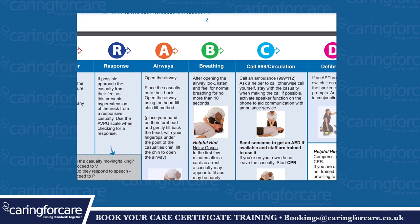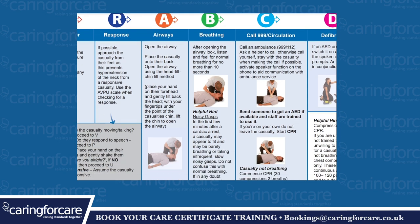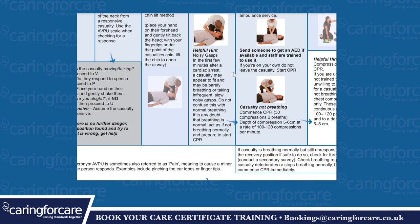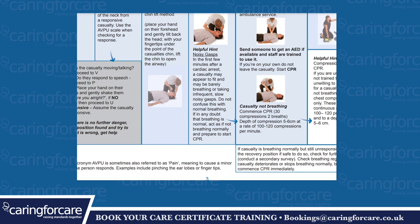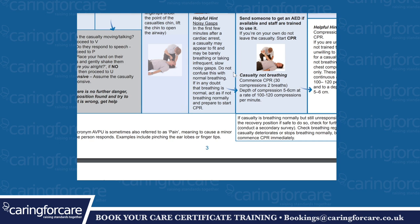C, Call 999 and Circulation. Call an ambulance on 999 or 112 and ask a helper to call, otherwise call yourself. Stay with the casualty when making the call if possible. Activate the speaker function on the phone to aid communication with the ambulance service. Send someone to get an AED if available and staff are trained to use it. If you are on your own, do not leave the casualty. Start CPR.